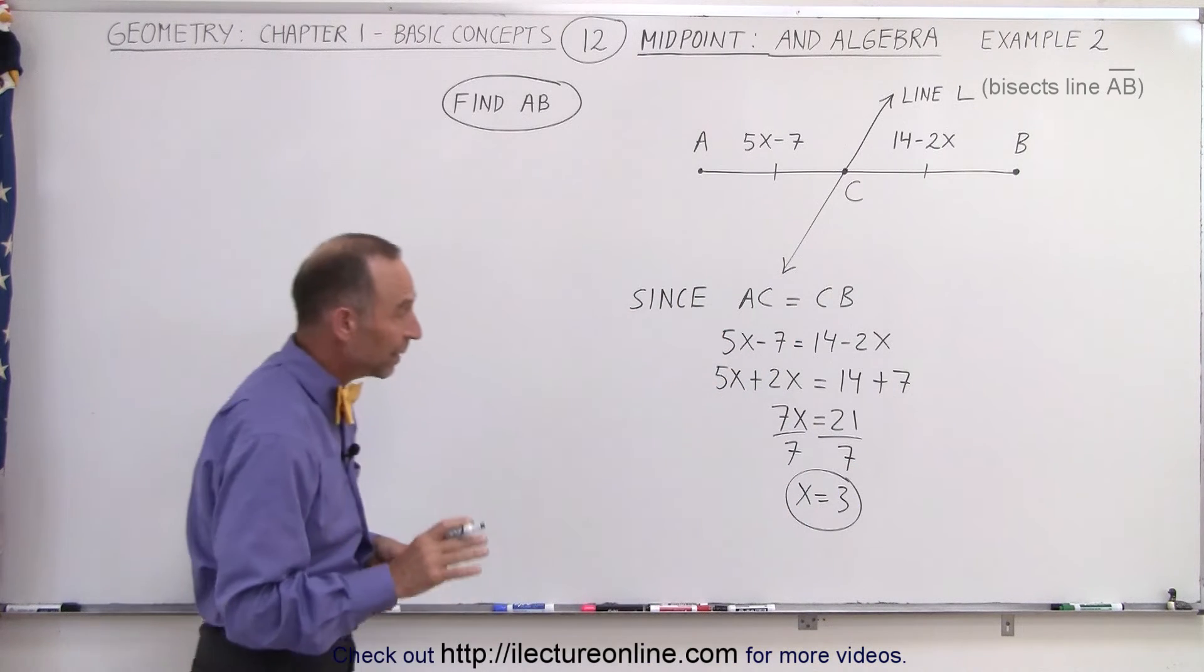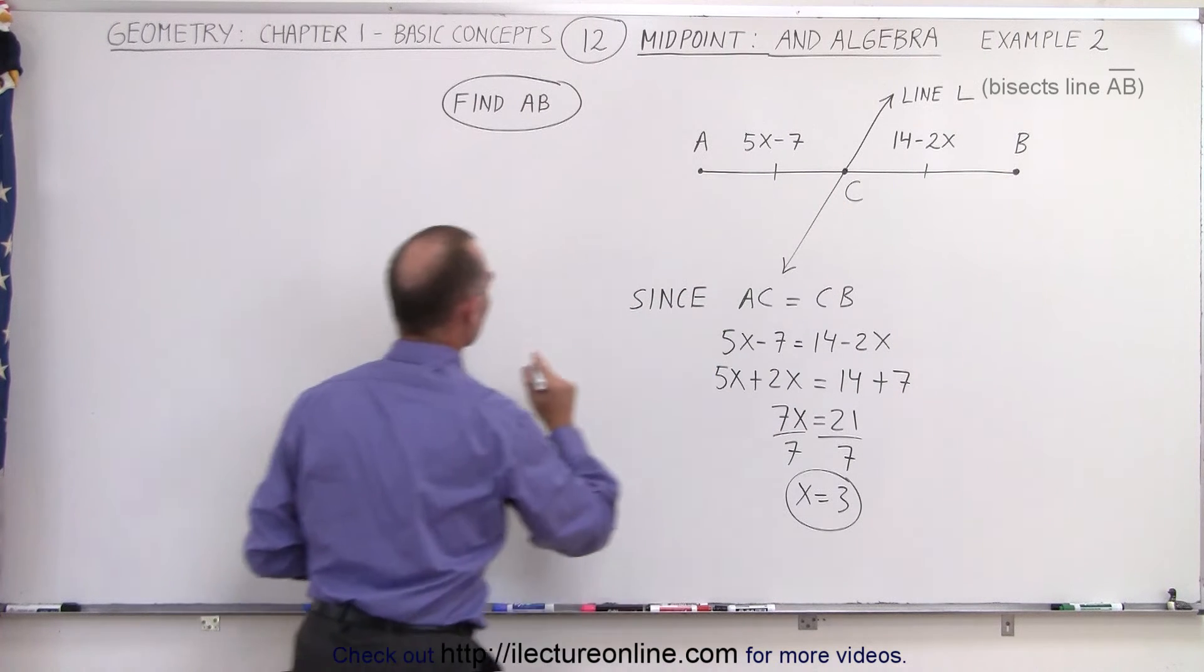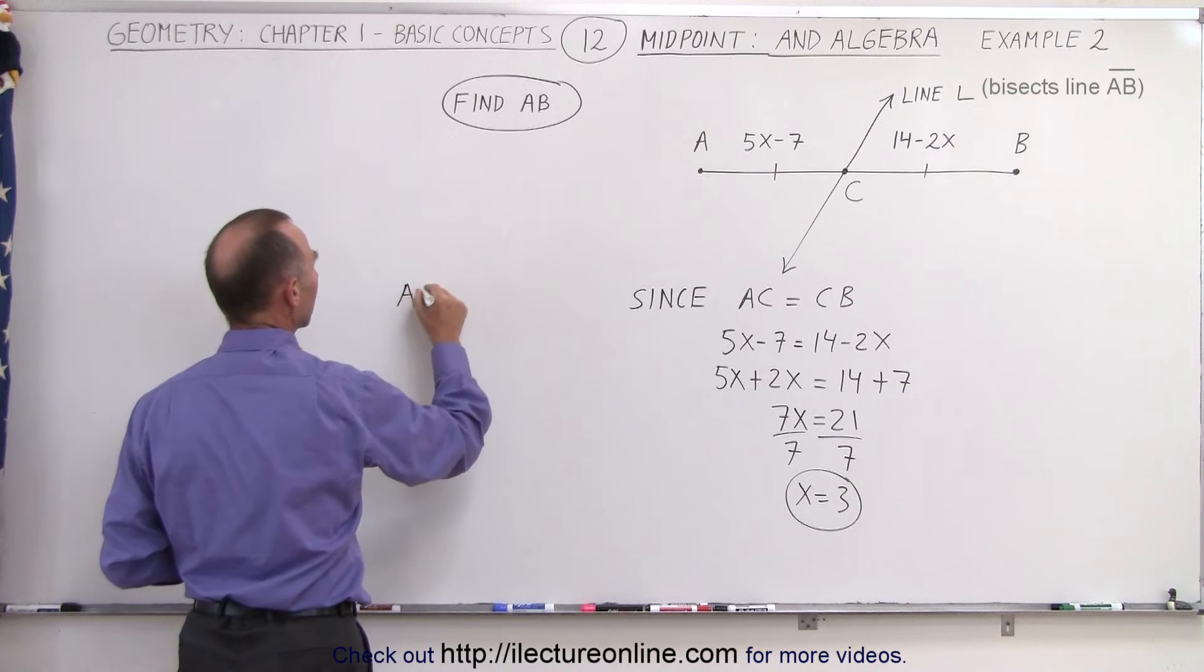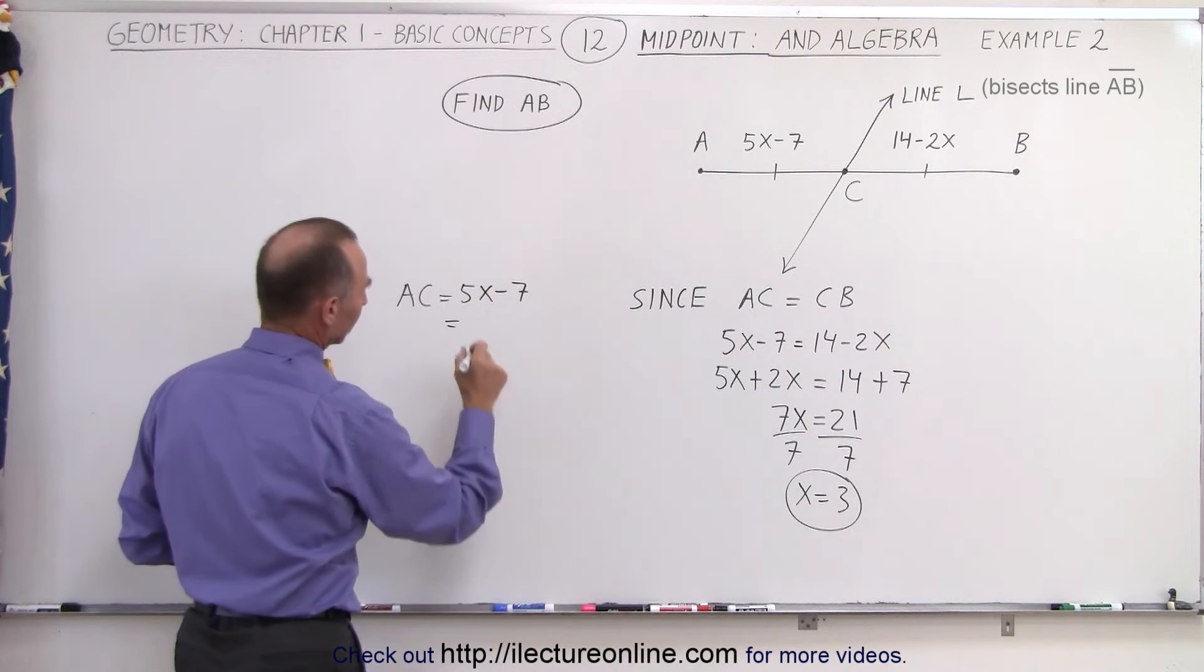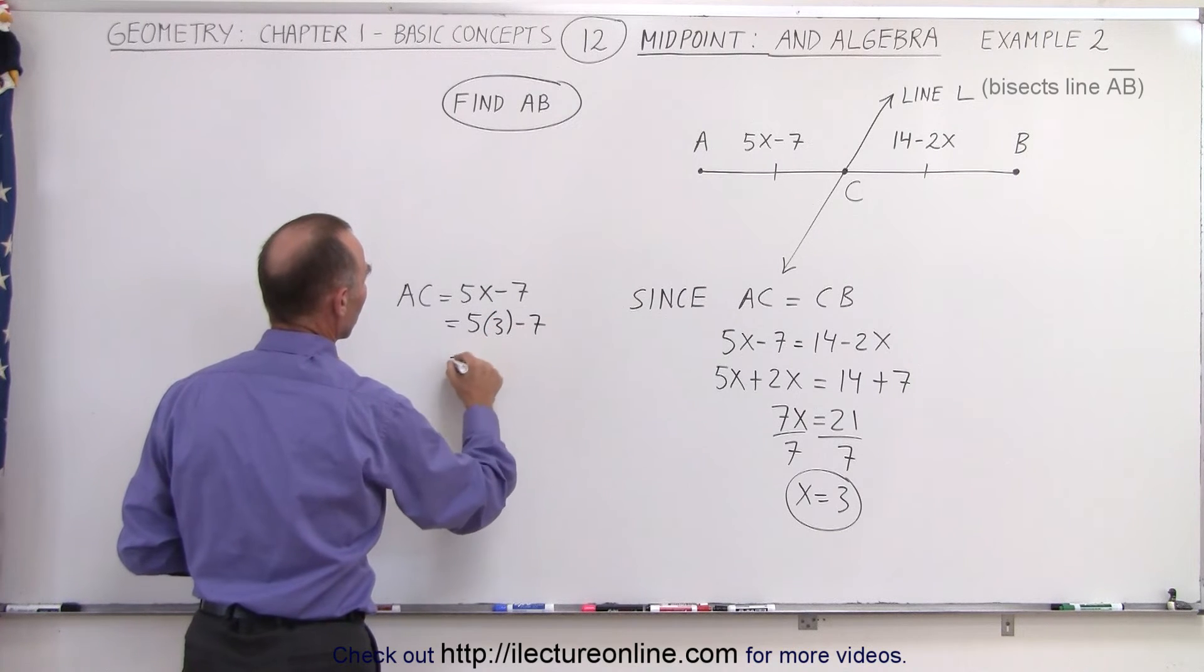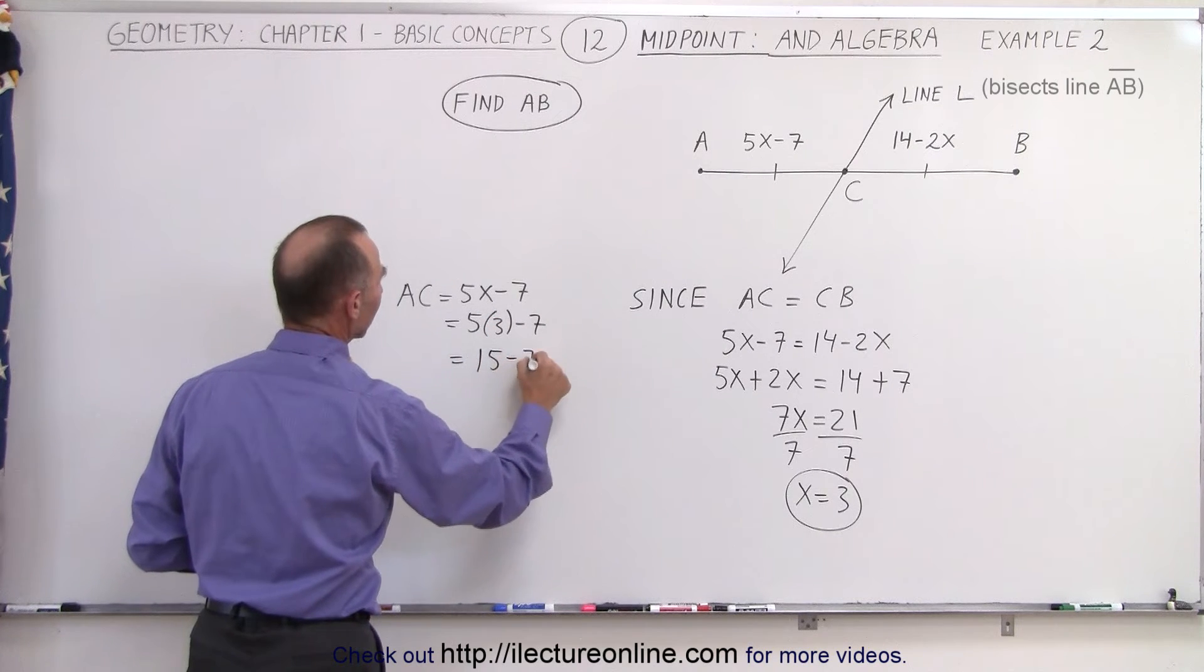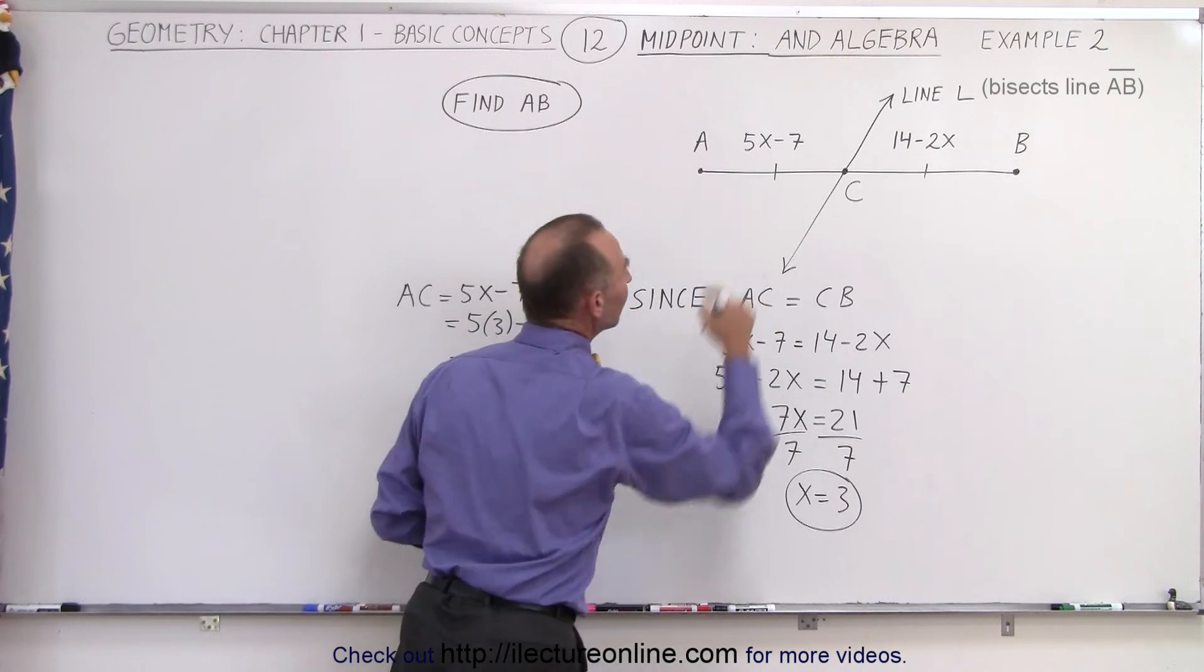Once we have the value for x being equal to 3, we can now figure out the distance from A to C. So A to C, the length is equal to 5x minus 7. Since x is equal to 3, we can write 5 times 3 minus 7, which is equal to 15 minus 7, which is equal to 8. So the length from A to C is equal to 8.